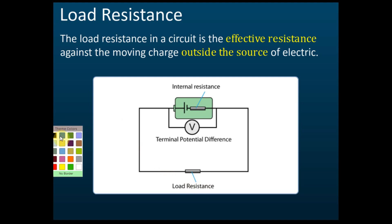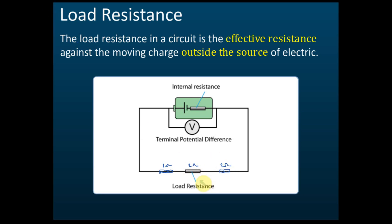For example, if we have three resistors — one ohm, two ohm, and three ohm — the load resistance is the resistance of all the resistors combined: one plus two plus three equals six ohms. So the load resistance is six ohms. Load resistance is the effective resistance outside the source of electricity.